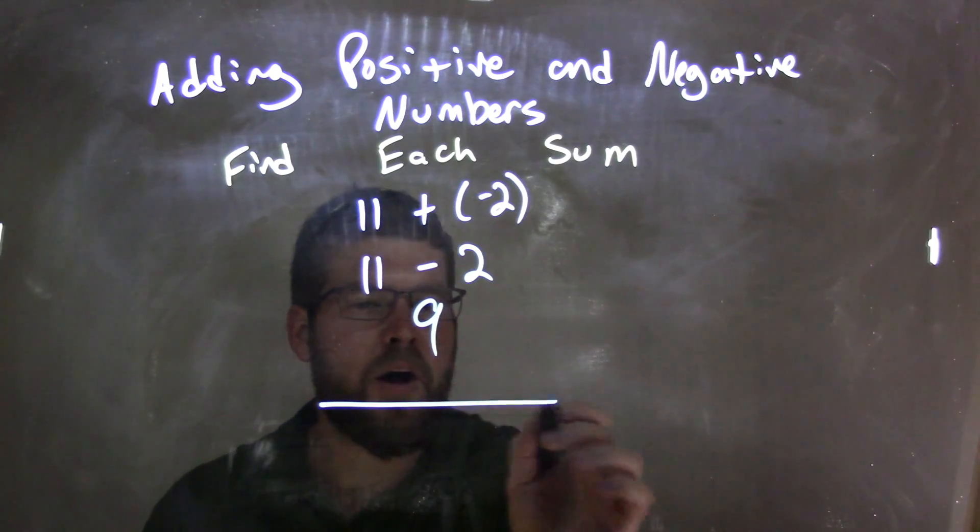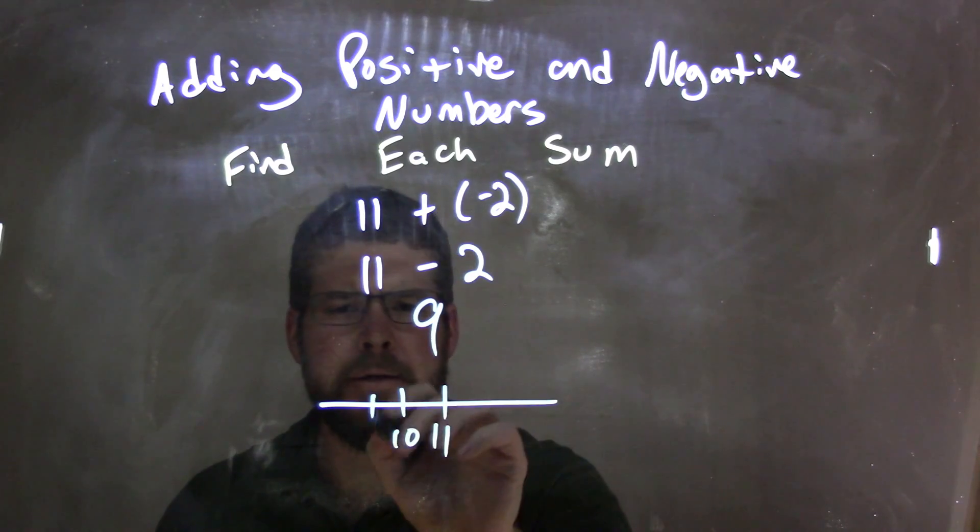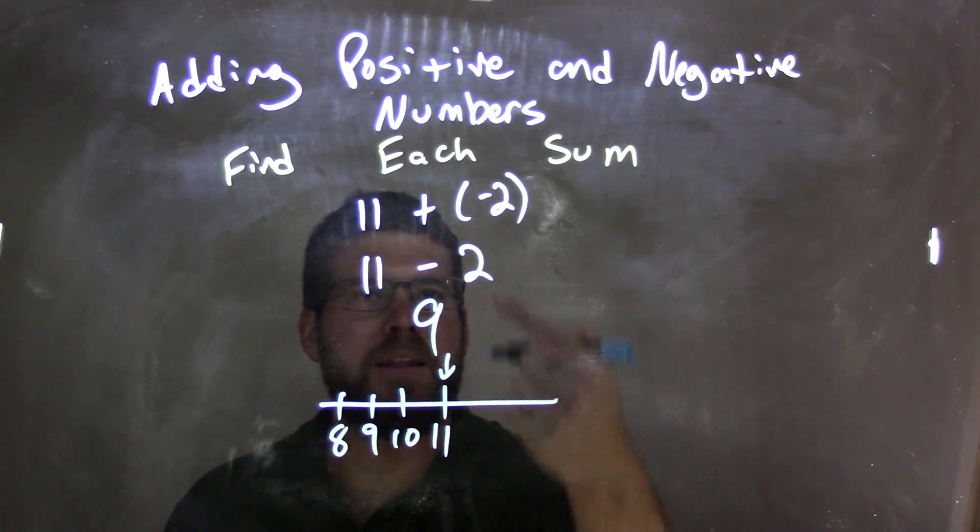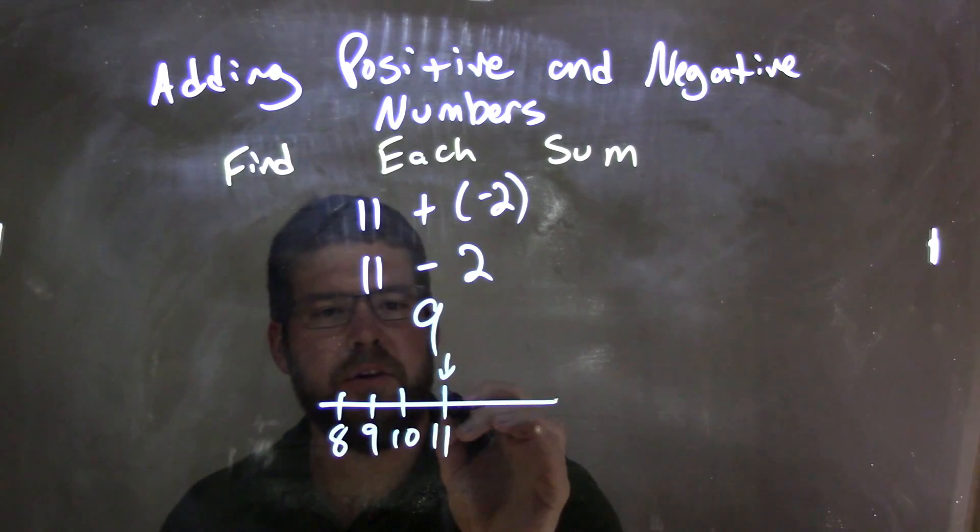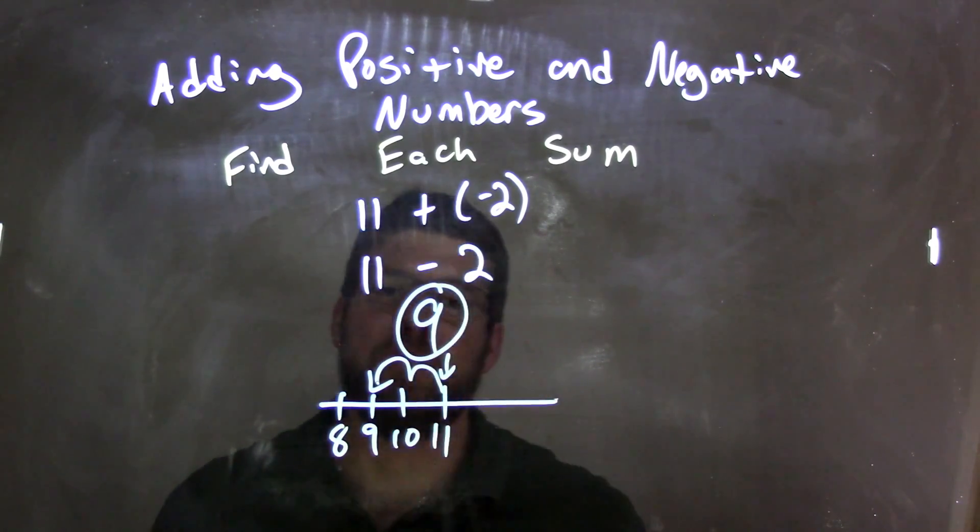Now if we wanted to see that on a number line, we start with 11 here. We move to the left, adding negative 2 units - 1 and 2. We come out with that final answer of 9.